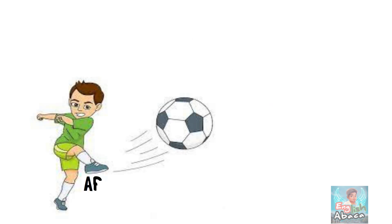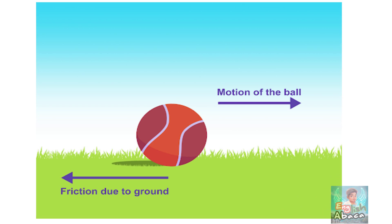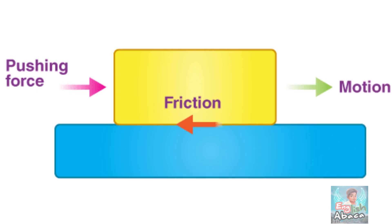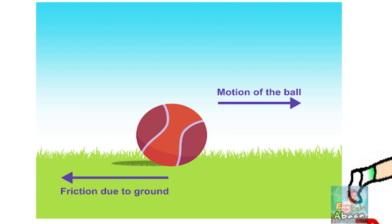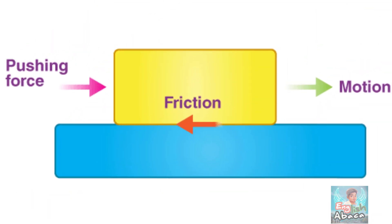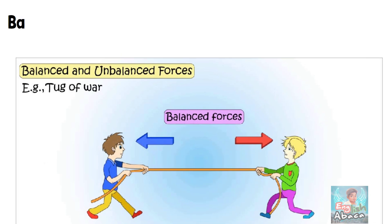Now we will discuss two types of force: Balanced force and Unbalanced force. Balanced force means the equal and opposite forces acting on a body which will not make the body move. If we use a moving object in the opposite direction, the force is balanced. If we push it or pull it, we can use the rest of the object.